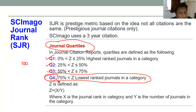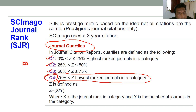Here we are taking an example of 100 journals only. Suppose 1000 journals are published in a particular domain like material science. Out of 1000, the top 250 ranked journals are called Q1 category, the next 250 are Q2 category, the next 250 are Q3, and the bottom 250 are Q4 category.